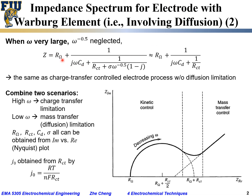We have now completed the impedance spectrum for an electrode reaction involving ohmic resistance from the electrolyte, charge transfer resistance, double layer capacitance, and a Warburg element for diffusion. The result is a relatively complex impedance: at high frequency it is kinetically limited and resembles the traditional case without diffusion; at low frequency it approaches mass transfer control with a straight line at 45° from the horizontal axis.